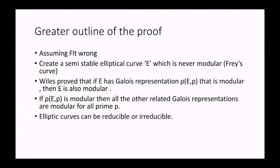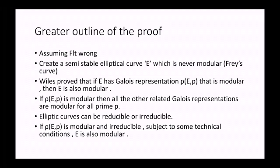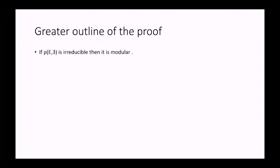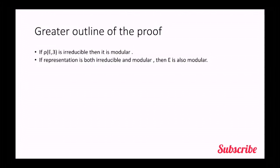And further we can say that every elliptic curve can be either reducible or irreducible. Now if rho e p is modular and irreducible subject to some technical conditions, the elliptic curve e is also modular. So this is known. Another known thing is that rho e3 is irreducible. If rho e3 is irreducible, then it is modular. And if the representation is both irreducible and modular, then the elliptic curve is also modular.